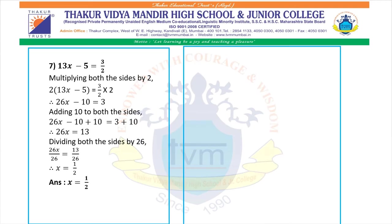Question 7: 13x minus 5 equals 3 upon 2. Multiplying both sides by 2: 2 into (13x minus 5) equals 3 upon 2 into 2. So 26x minus 10 equals 3. Adding 10 to both sides gives 26x equals 13. Dividing both sides by 26: 26x upon 26 equals 13 upon 26. Therefore x equals 1 upon 2. The answer is x equals 1 upon 2.